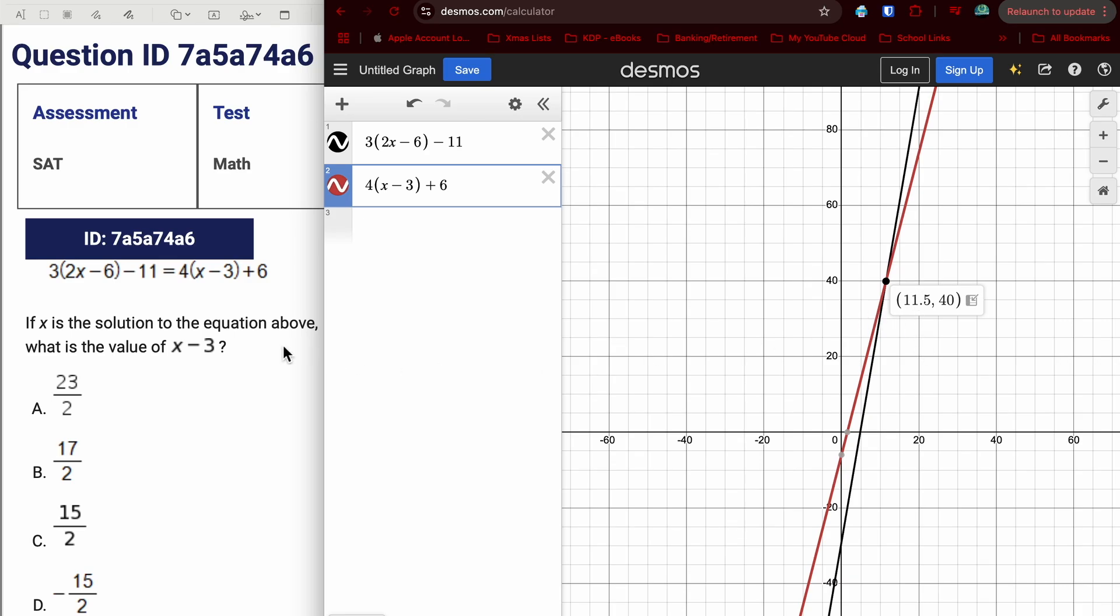The point of intersection is going to give you the X value of that equation when it is solved. So 11 and a half is my X. 11 and a half minus 3. Most of you are going to be able to do that in your head, it's 8 and a half. But if you needed to, you could even use Desmos and subtract the 11 and a half minus 3 gives you 8 and a half.